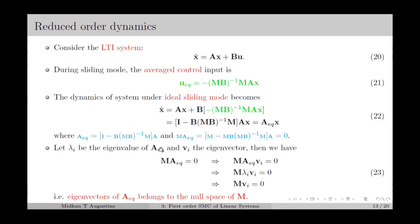Let λᵢ be the eigenvalues of A_eq and vᵢ be the eigenvectors. Since M times A_eq equals zero, we have M times A_eq times vᵢ equals zero. Since vᵢ is an eigenvector, A_eq vᵢ equals λᵢ vᵢ, so M times λᵢ vᵢ equals zero. Since λᵢ is a scalar, this gives M times vᵢ equals zero. This means the reduced order dynamics are decided by A_eq, and the eigenvectors of A_eq belong to the null space of M. Since M has m rows and n columns, the null space of M is of order n minus m. This implies the reduced order dynamics will be of order n minus m, where n is the number of states and m is the number of control inputs.